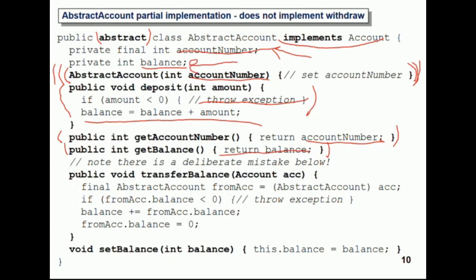Transfer balance is the next method — but this is an example of a bad implementation. There's a deliberate mistake in here which we'll come to a bit later. We also have set balance as another common behavior method, which is very simple — you just set the balance to the value you want.